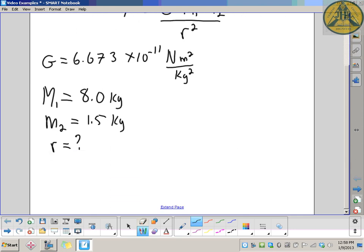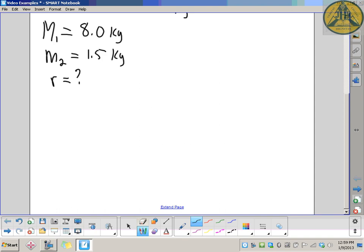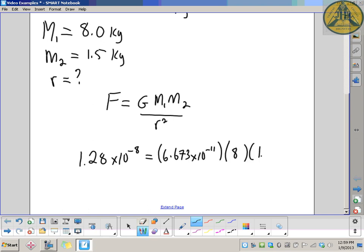Let's put our values into that formula. F equals G M1 M2 over r squared. Force is 1.28 times 10 to the negative 8 equals 6.673 times 10 to the negative 11 times 8 times 1.5 over r squared.